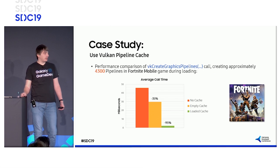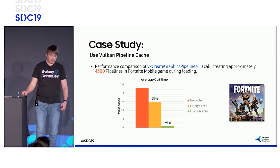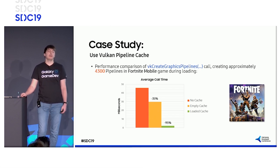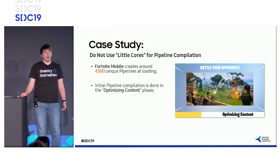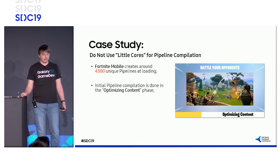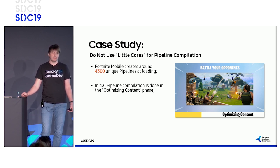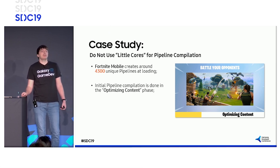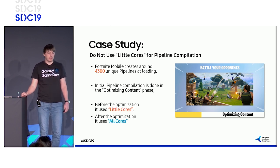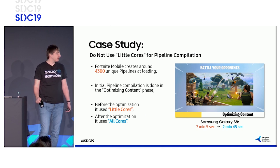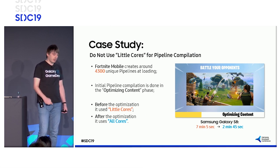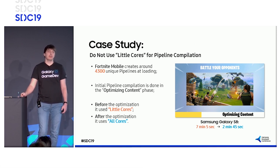Now let's look at the loaded cache performance. As expected, the performance improvement is significant because all pipeline data was already in the cache. As shown previously, creating many unique pipelines with empty cache takes a long time. To inform the user, Fortnite showed an 'optimizing content' message. We found the game engine used only little cores for pipeline compilation, so we changed the affinity mask to all cores. This unlocked the high-performance cores and greatly improved the optimizing content phase. On the Samsung Galaxy S8, performance increased by more than two times. It is very important not to use only little cores for initial pipeline compilation.